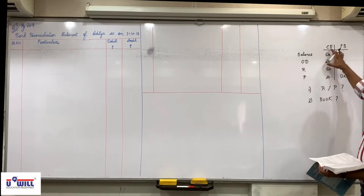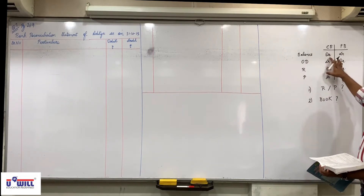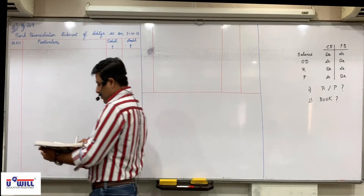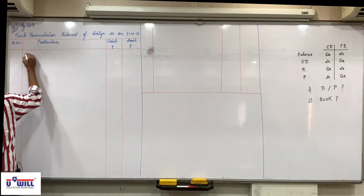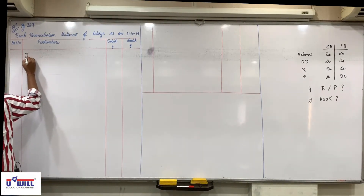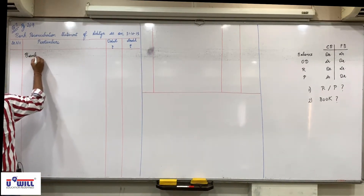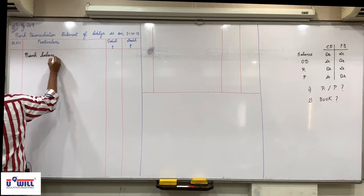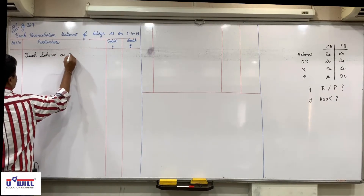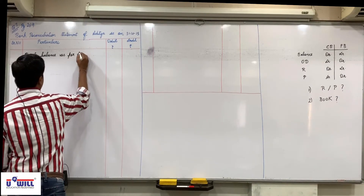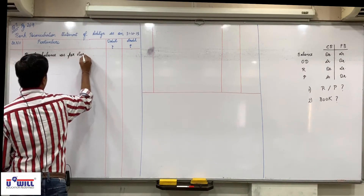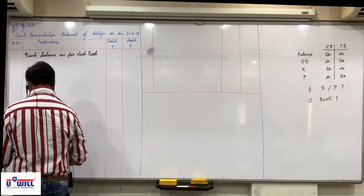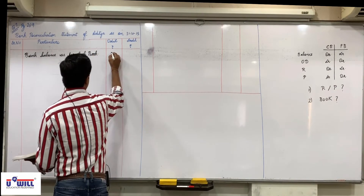Bank balance as per cash book — where should we write it? Bank balance as per cash book goes in the debit column: 9,000.